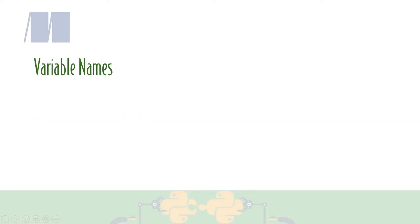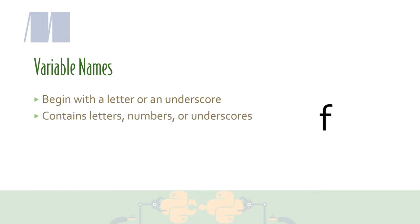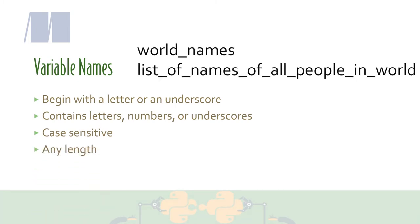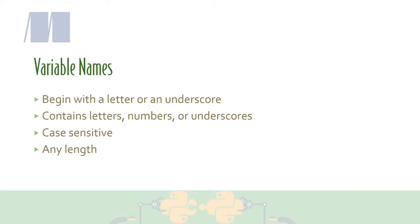You write code with variable names that make the code readable by other people and by yourself later on. Many programming languages have restrictions on the names that you can use for variables. They must begin with a letter or an underscore. Other characters in the variable name can be letters, numbers, or an underscore. Names are case sensitive and names can be any length.